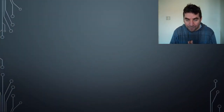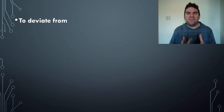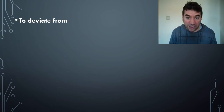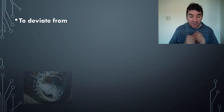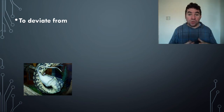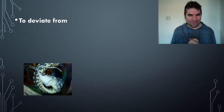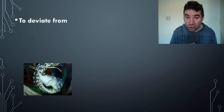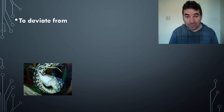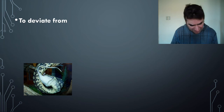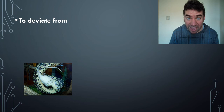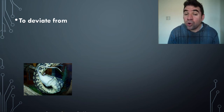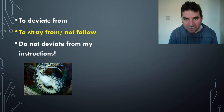To deviate from — if you deviate from a plan, you don't follow the plan; if you deviate from instructions, you don't follow them. Maybe your friend said 'don't feed my snake,' but of course you fed the snake because it seemed cool to watch — and then your friend gets back and you're in trouble. To deviate means to stray from or not follow. Example: do not deviate from my instructions.